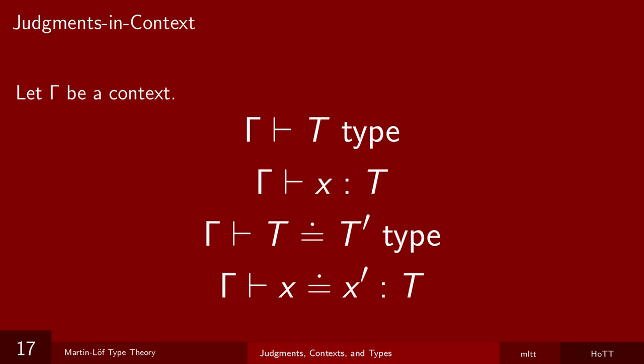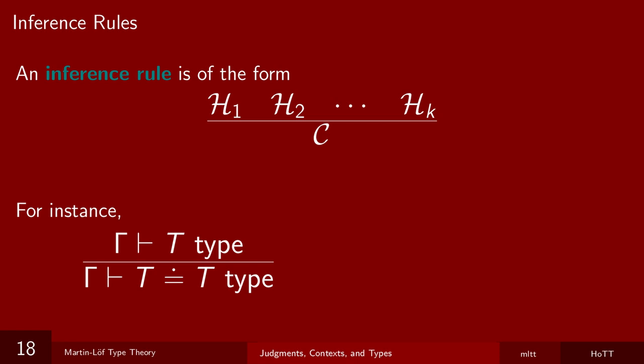Our deductive system will be built out of inference rules. An inference rule is a concise way to make a statement of the form, if something, then something. The somethings will be judgments in context. So if H1 through HK and C are judgments in context, this inference rule says that if H1 through HK hold or are true, then so too does C.